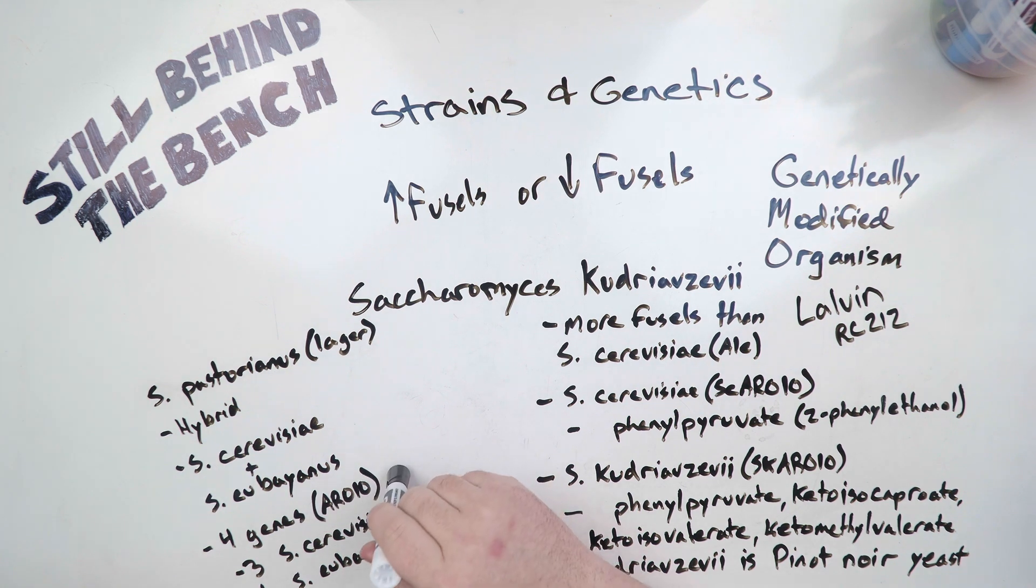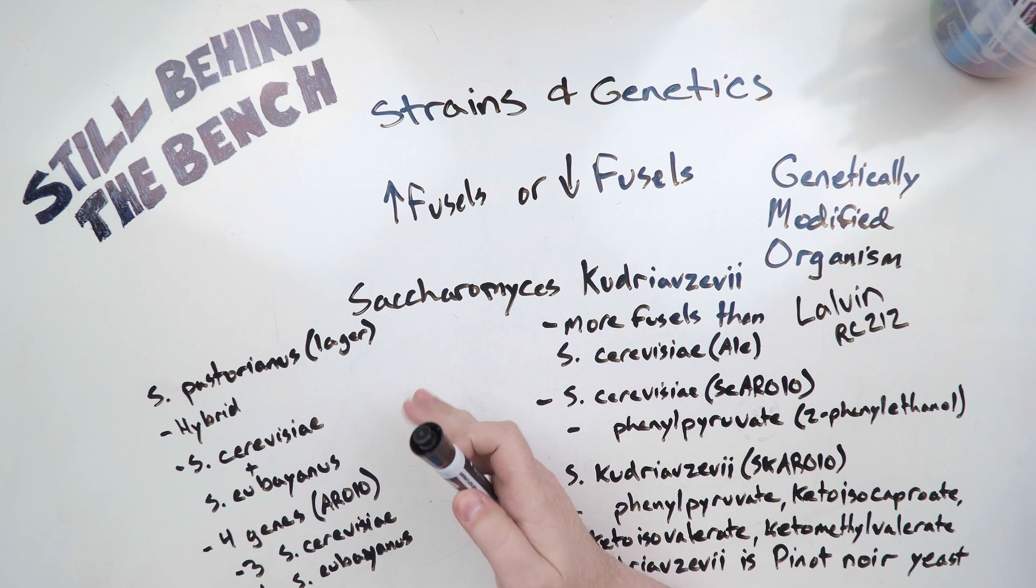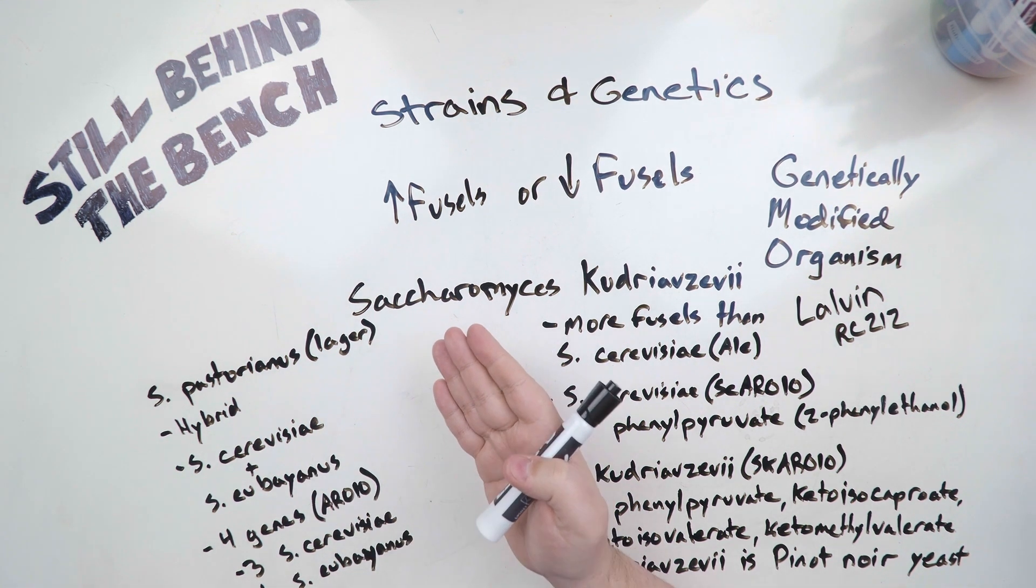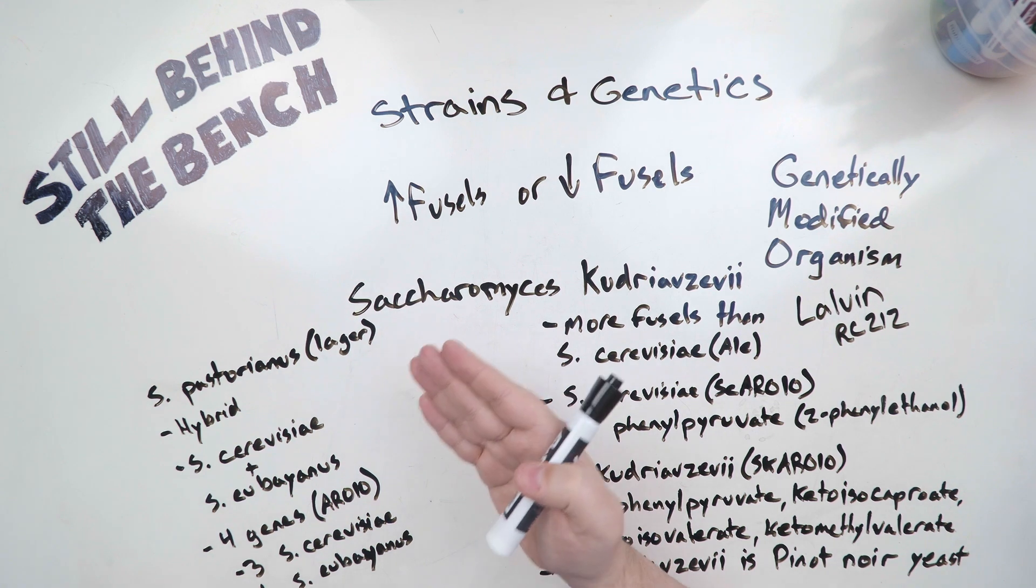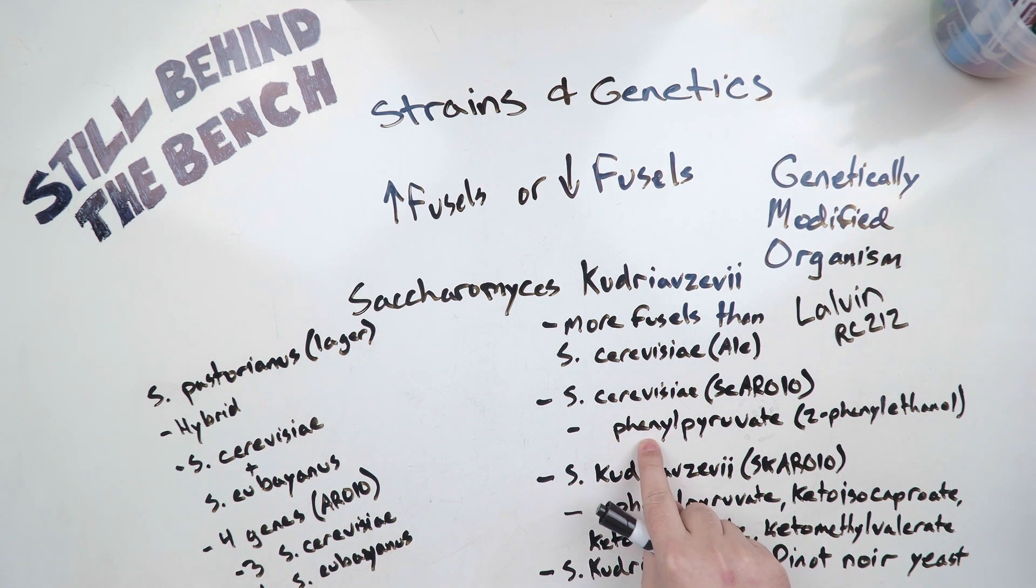In this yeast it also has this ARO10, it has four copies of this gene. Three of them came from the cerevisiae and then one came from the eubayanus. In the case I'm describing here it came from a study - it's specific to that strain and it's a lab strain so it's probably not something that you would find at a brewery. Regardless, my point is that when the enzymes are made from the cerevisiae gene they're going to have this preference for phenylpyruvate, but if it's made from the eubayanus gene instead it has a preference for keto isovalerate, which is the ethereal wine flavor.